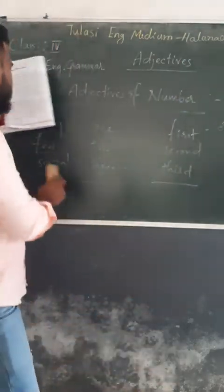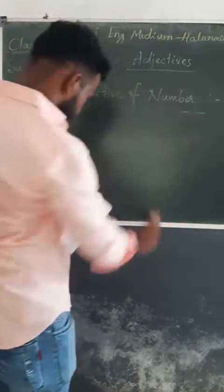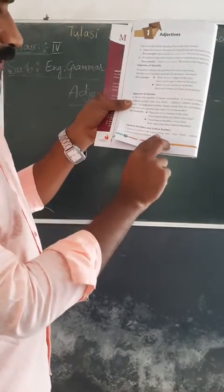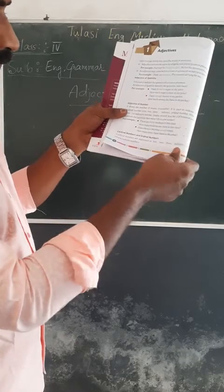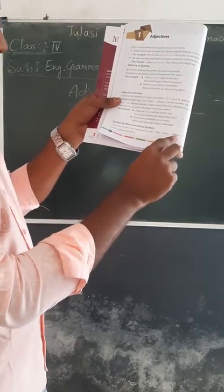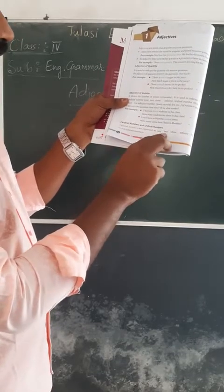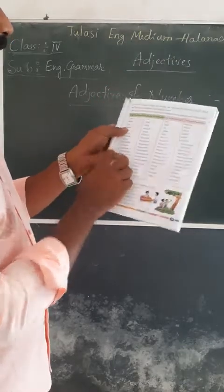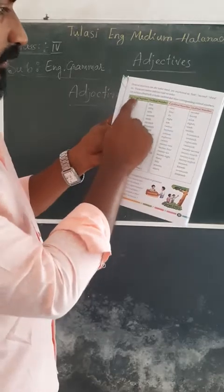Cardinal numbers are expressed as 1, 2, 3, continuing until infinity — there is no end. They indicate the exact number of nouns. There is a table given in the textbook showing cardinal and ordinal numbers — for example, cardinal: 1, 2, 3, 4, 5 and their ordinal equivalents: first, second, third, fourth, fifth.